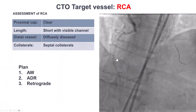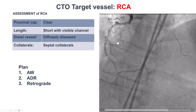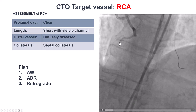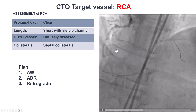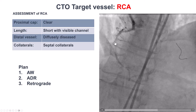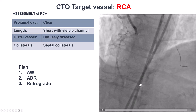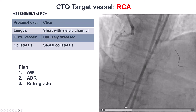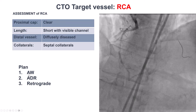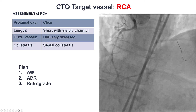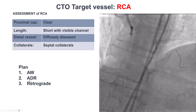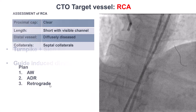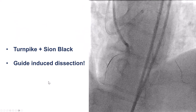Analyzing the lesion, we do have a well-defined proximal cap. As mentioned, there may actually be contrast flow going through the occlusion. The distal vessel is diffusely diseased and there were some septal collaterals. The plan was to go with antegrade wiring, followed by dissection re-entry antegrade, and if that didn't work, go retrograde through the septals.